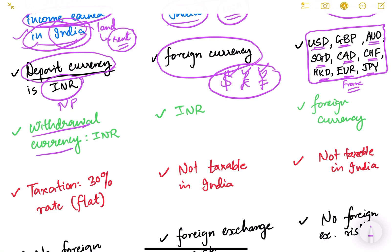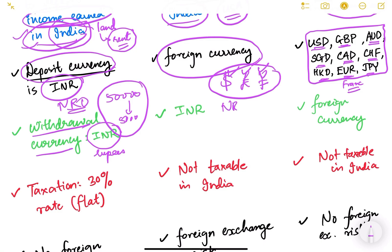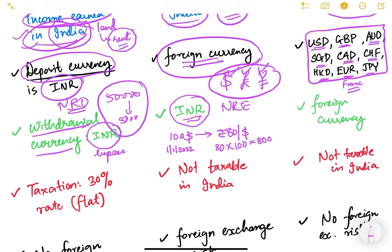When withdrawing from an NRO account, you can only withdraw in Indian rupees (INR). For an NRE account, although you deposit in foreign currency, withdrawal can only be in Indian rupees as well. For example, if you deposit 100 dollars and on that day the exchange rate is 80 rupees per dollar, your account is credited with 8,000 rupees. When you want to withdraw, you can only withdraw in rupees — you cannot withdraw 80 dollars back.